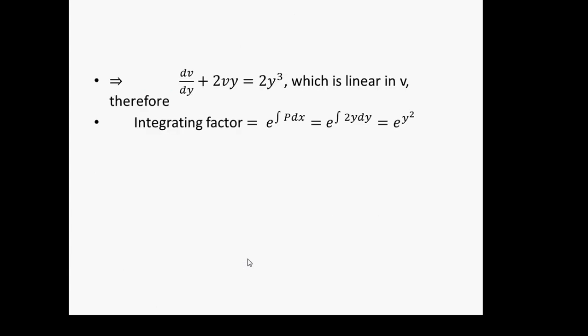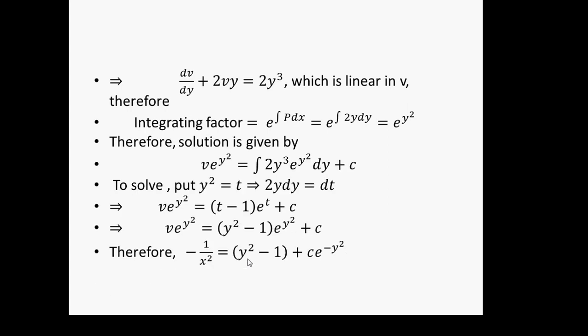So we have a linear equation. The integrating factor is e^(∫P dy) where P = 2y, so the integrating factor is e^(y²). The solution is v · e^(y²) = ∫2y³ · e^(y²) dy + C. To solve, we put y² = t so 2y dy = dt. After integrating, we have the result: −1/x² = (y² − 1) e^(−y²) + C·e^(−y²), giving the required solution.